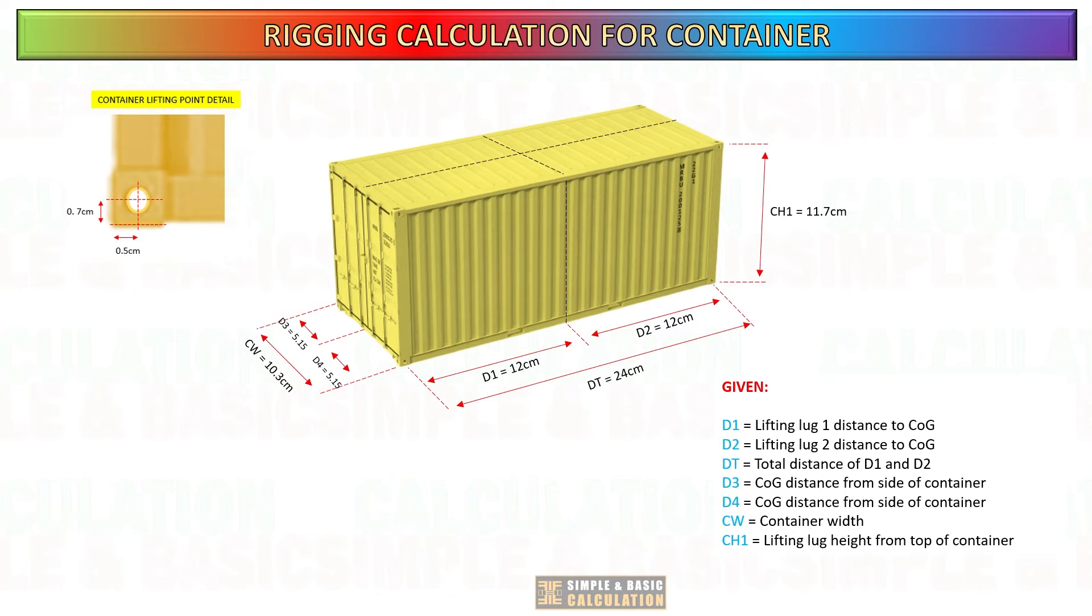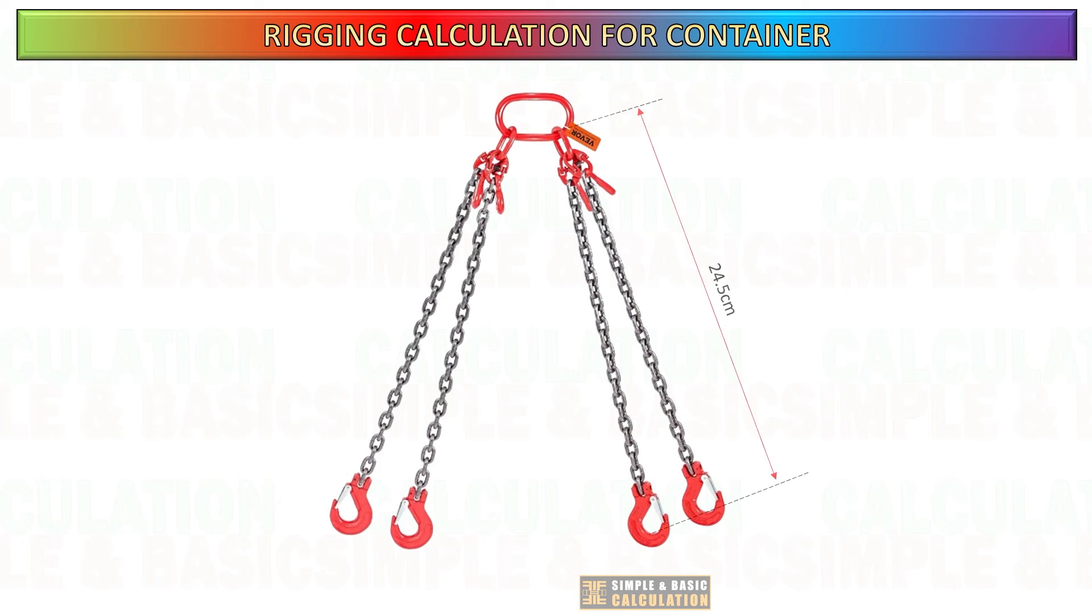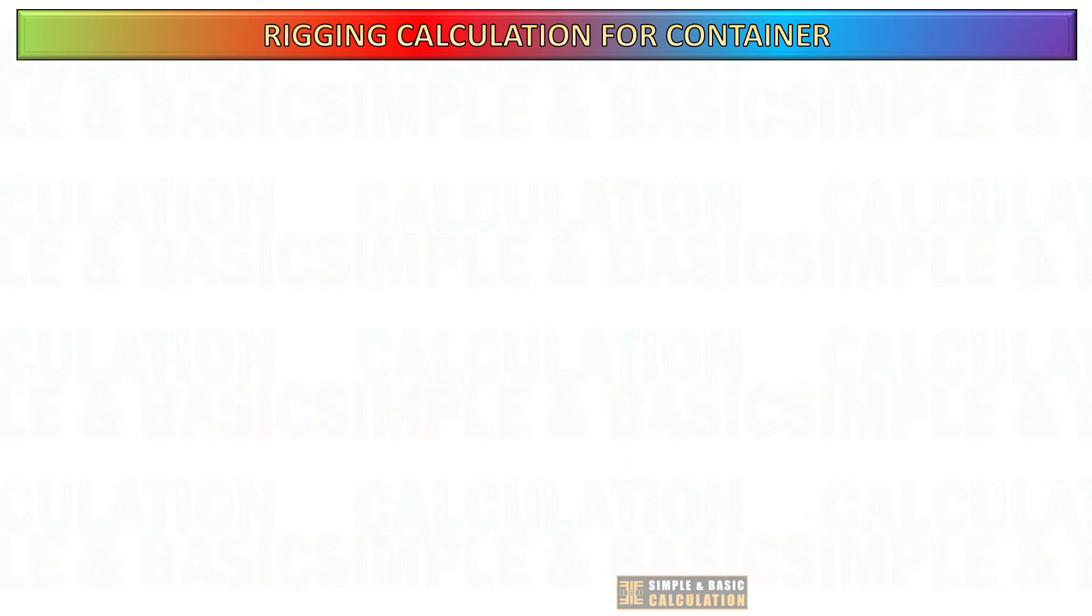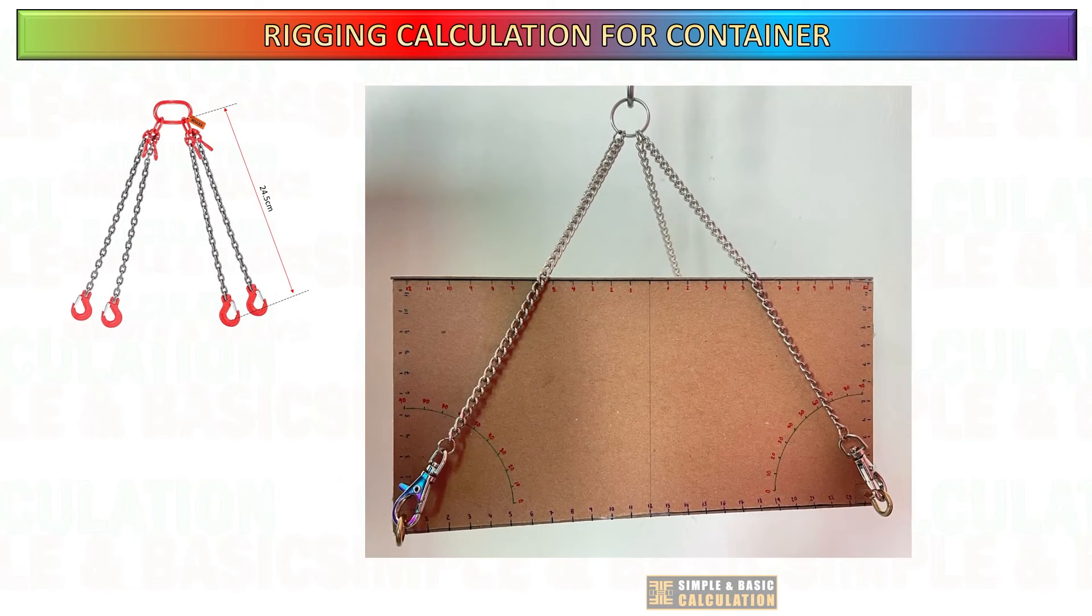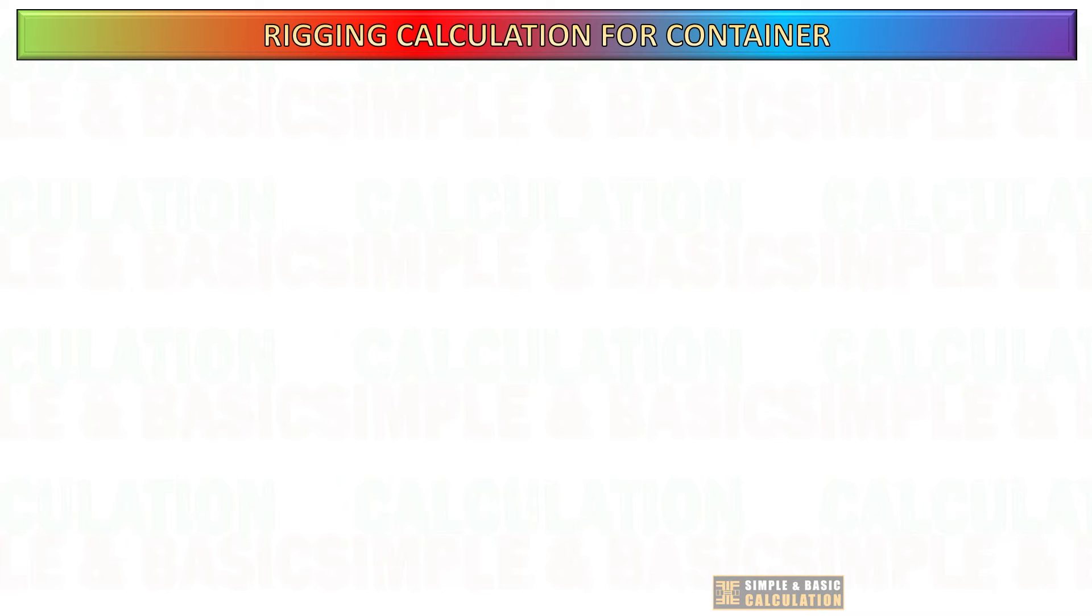The total length of the chain sling, excluding the master link, is approximately 24.5 cm. In this example, I ignore the dimensions of the container lifting lug. Given that I am exclusively utilizing a chain sling with a hook in my model, it is important to take into account the length of the lifting lug when doing your computation in practical situations.